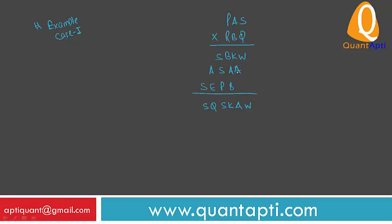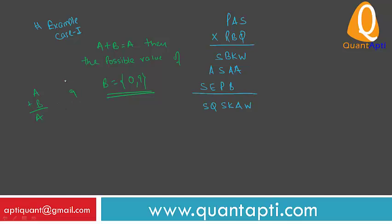Now some examples based on fundamental rules. Consider the problem P-A-S-R-B-Q-S-B-S and K-A-W. We can see that if A plus B equals A, then the possible value of B is 0 or 9. If B is 9, consider A as value 5 — if a carry of 1 comes from the right of the column, then B should be equal to 9.